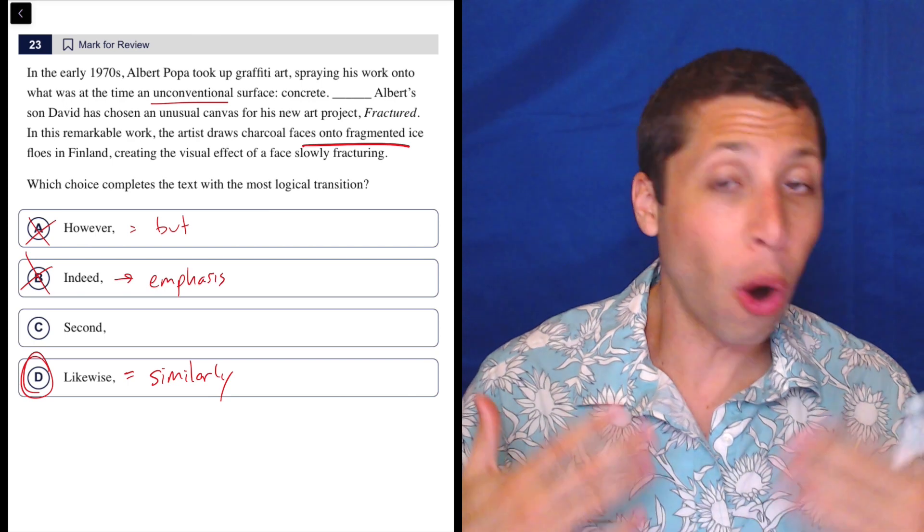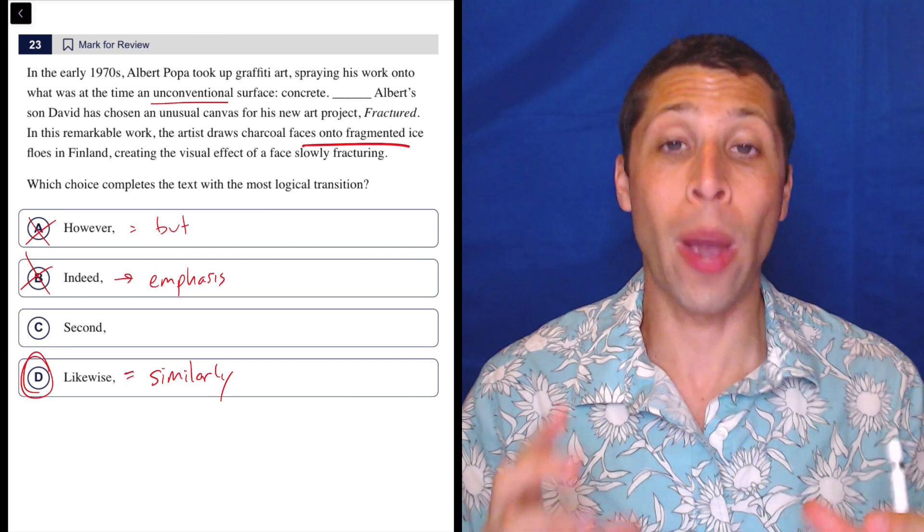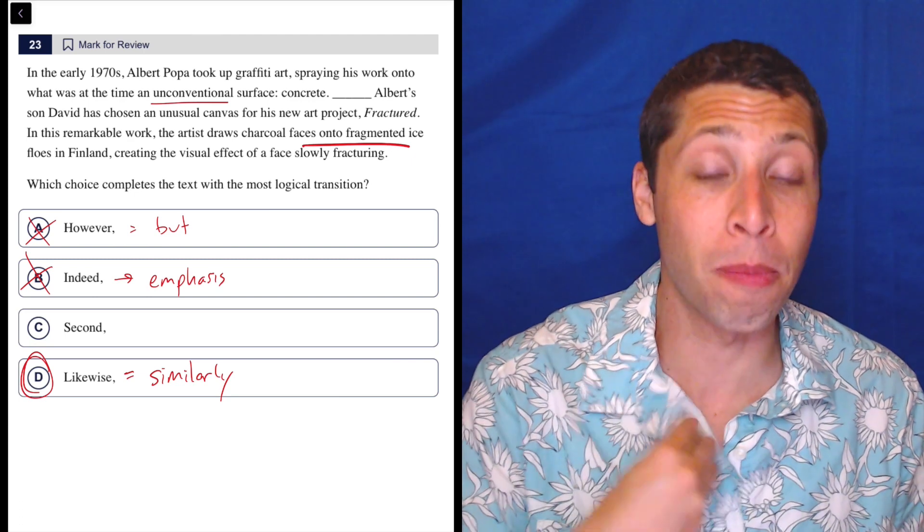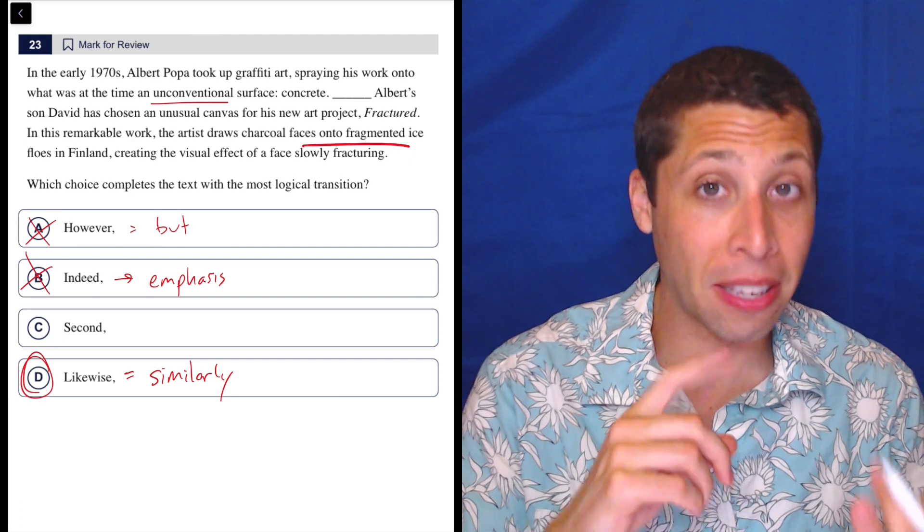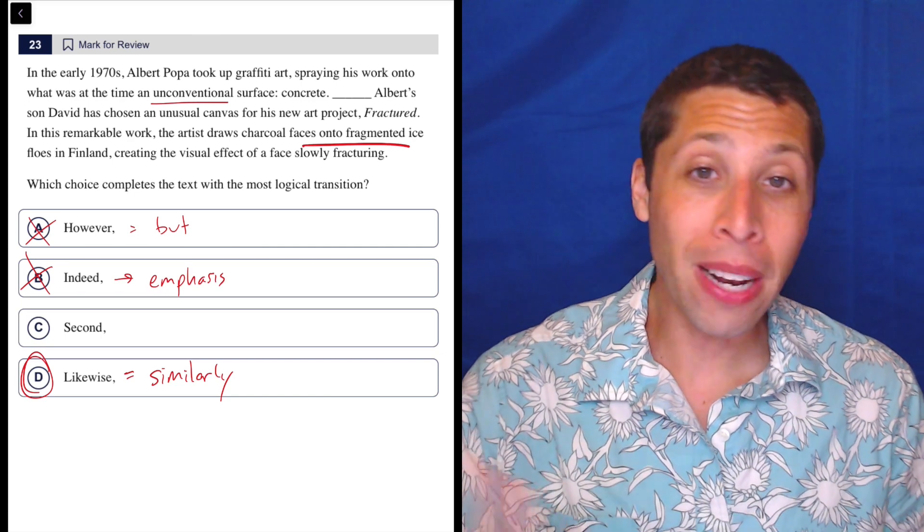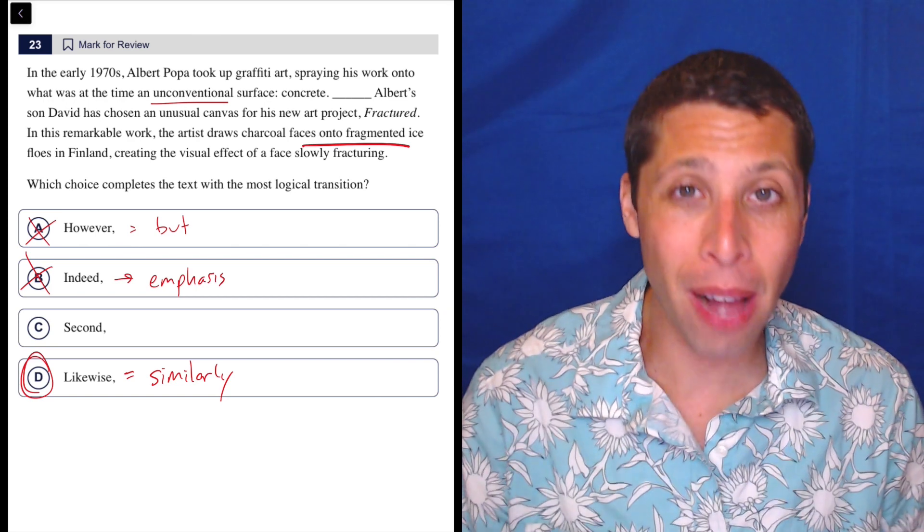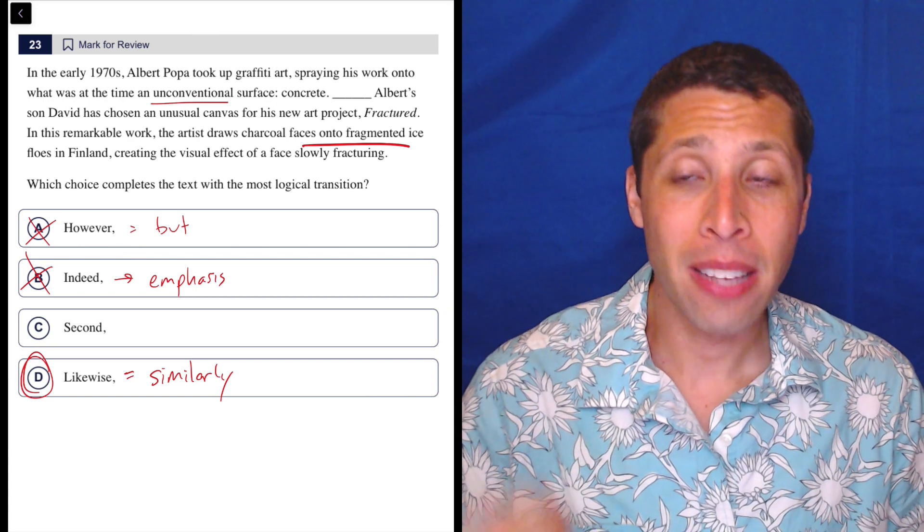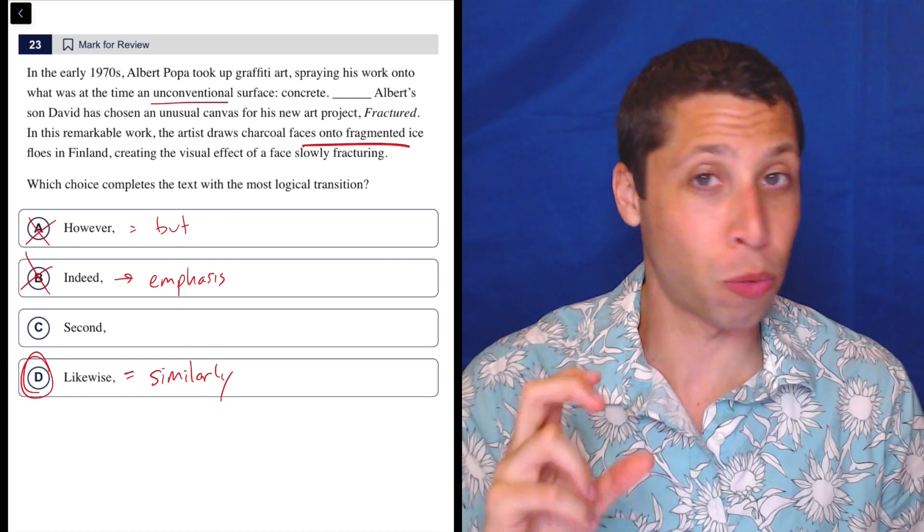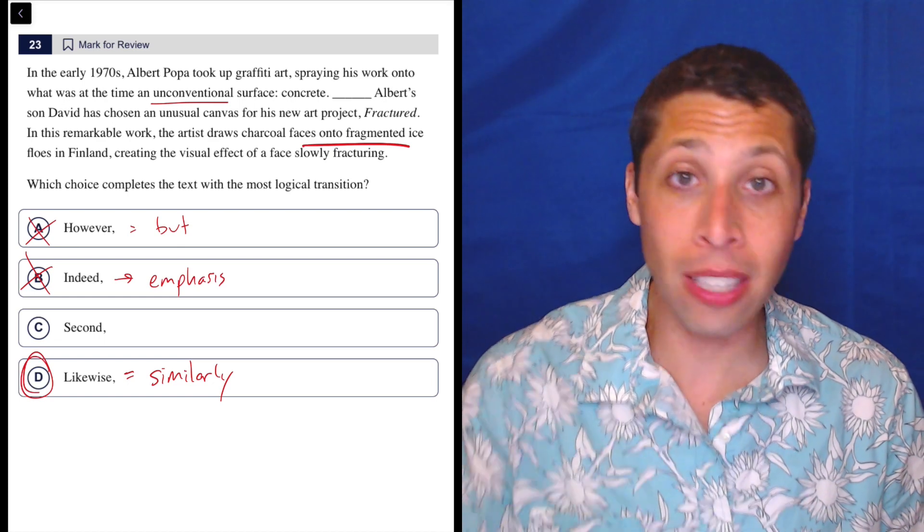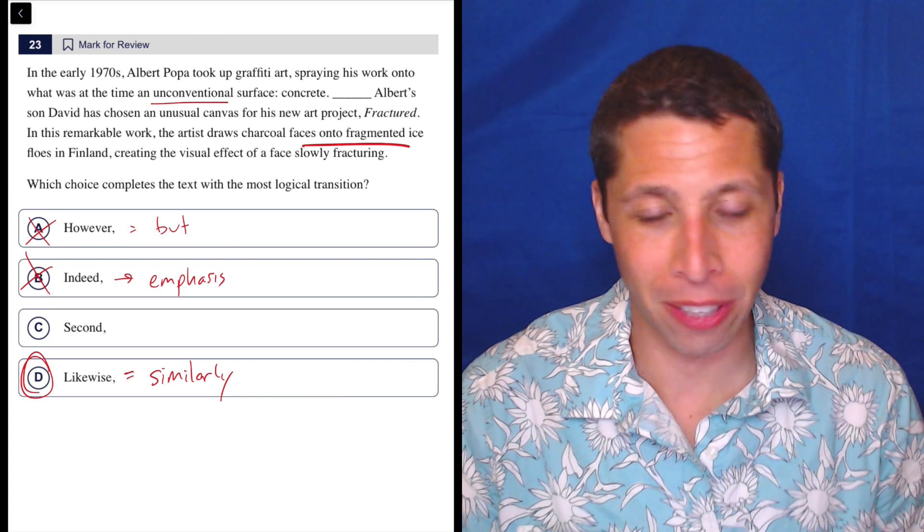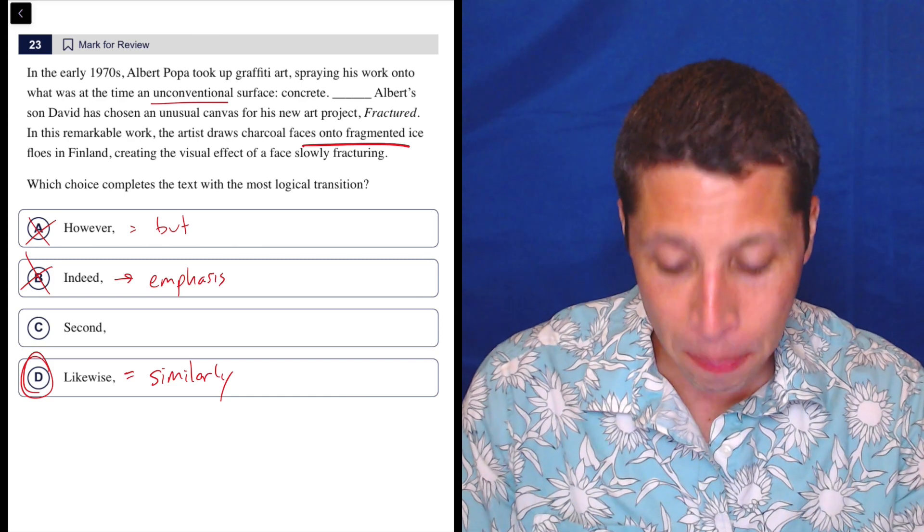But remember, we ultimately would like to have kind of a gut reaction to like, oh, this is the kind of word I would have said here. This is my transition. And that's why things like but, so, and those are such useful placeholders. But if we can't do that, always remember, we only have four options. Test them out. See how they sound. See how they fit. See if you can find that transition that you weren't able to pick up on when you first read the sentence. See if just seeing these answer choices kind of makes you see a connection that you didn't see originally. That's kind of the point.